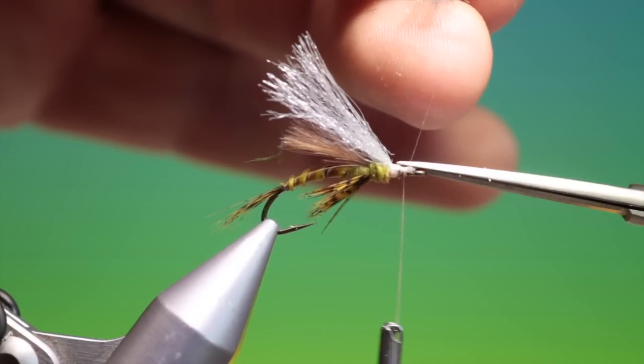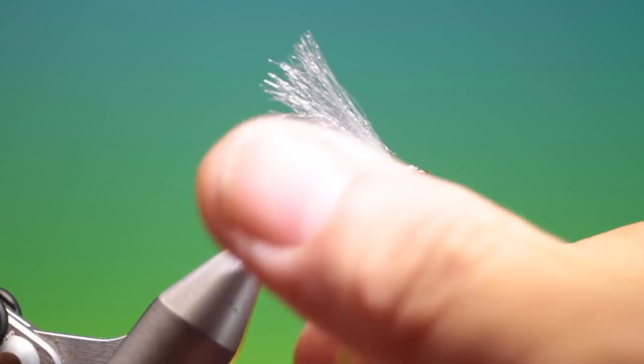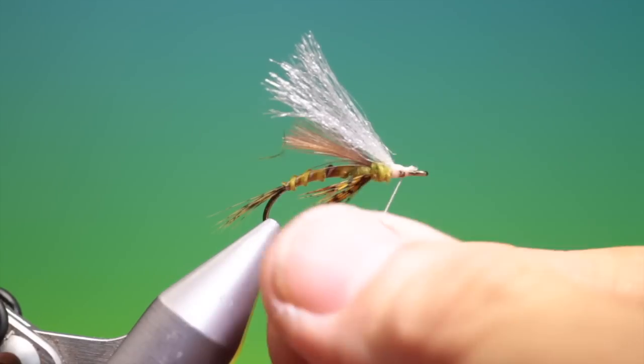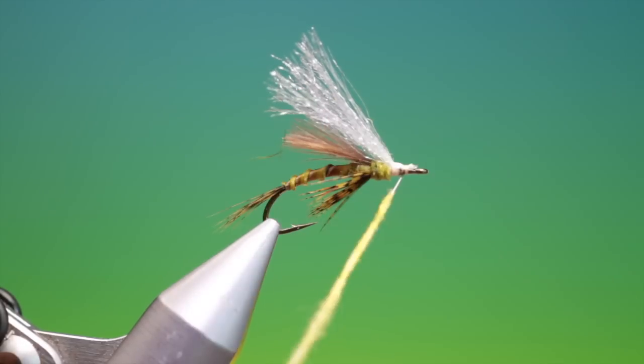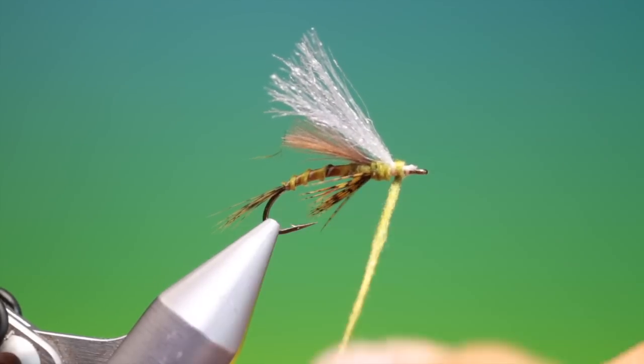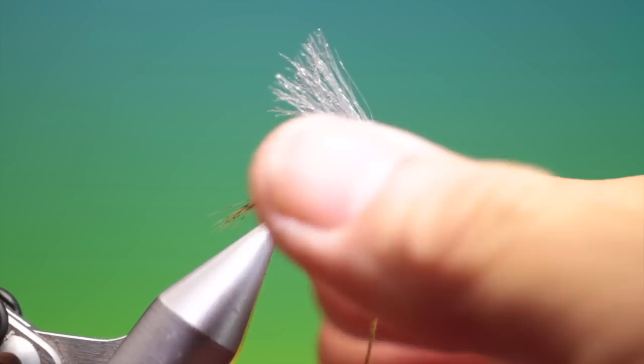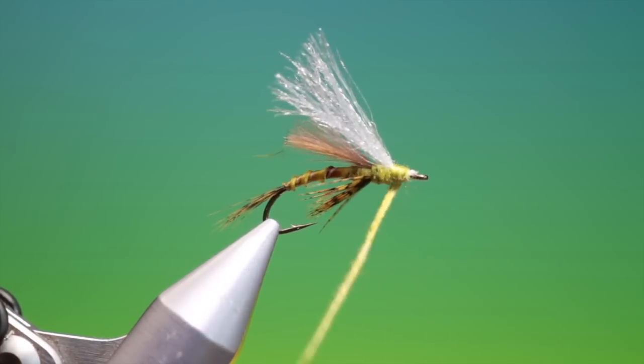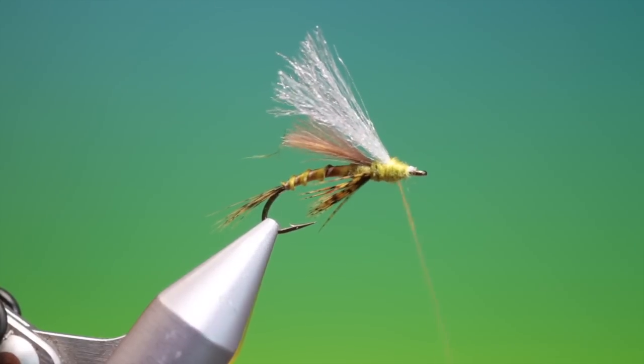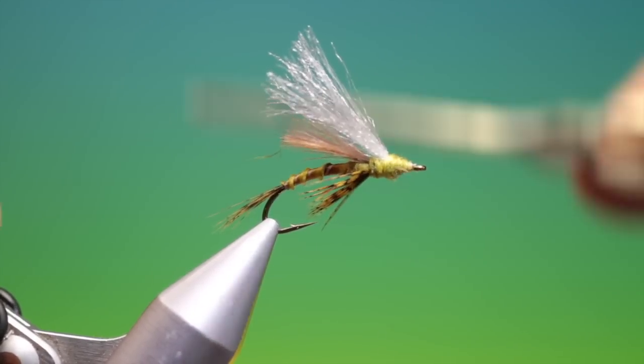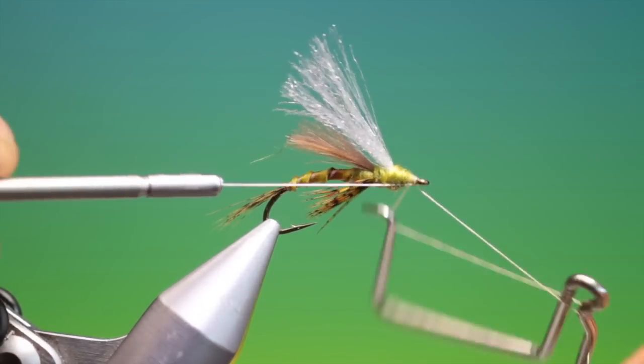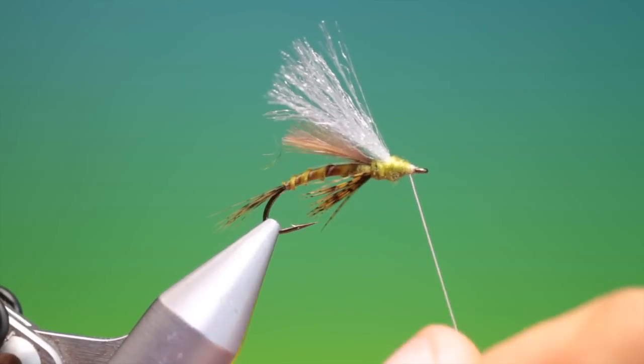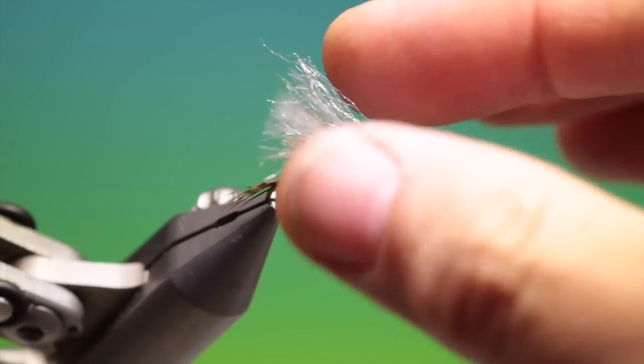Remove those. Little more olive superfine dubbing. Just catch that in. Spin this up. Forward. Unwhip finish. Remove the tying thread. And there she is.